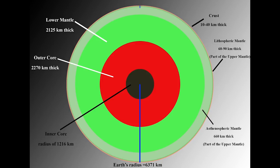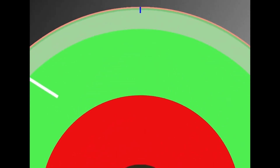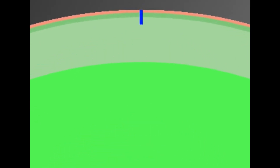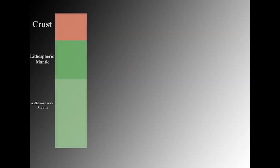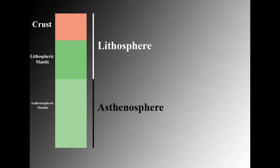And what does magma generation have to do with plate tectonics? To answer these questions, we need to think deeply — but not too deeply. We need to think about the outermost 200 kilometers of the earth, the only part where conditions are right for the mantle to melt. Geoscientists see this outermost 200 kilometers as crust, lithospheric mantle, and underlying asthenospheric mantle.